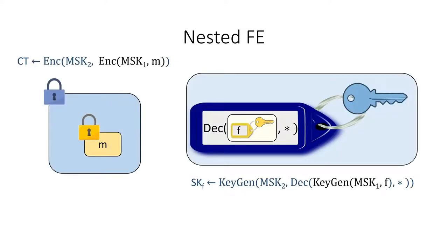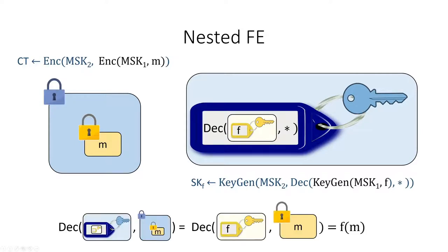We start with a normal FE scheme: the ciphertext is the usual encryption of a message, and the function key is the usual function key. Now we take an independent FE scheme and lay it on top of the original. The encryption is now the encryption under first the yellow FE scheme, and then the blue FE scheme. For the blue function key, we create a function key for the function that will decrypt its input using a hard-wired yellow function key for function F. For correctness of our nested scheme, if we decrypt the blue ciphertext with the blue function key, we should get F of M. This works because decrypting the blue ciphertext with the blue function key gives us the blue function of the yellow ciphertext, but the blue function is the decryption of the input with the yellow function key — so we are decrypting the yellow ciphertext with the yellow function key, giving us F of M. You can also extend this to nest more than two layers of FE.